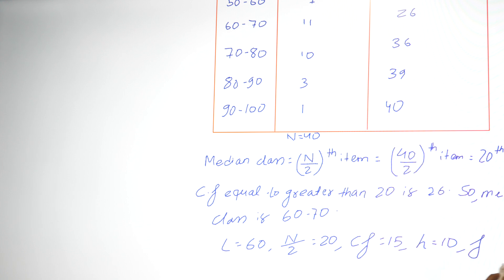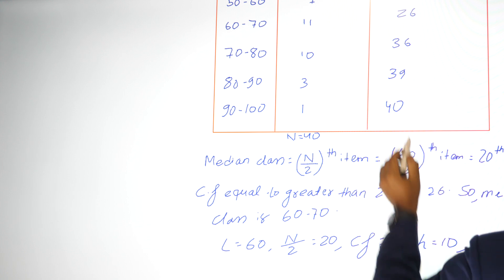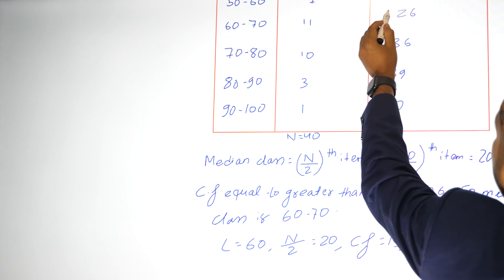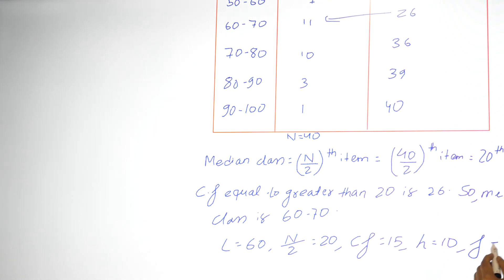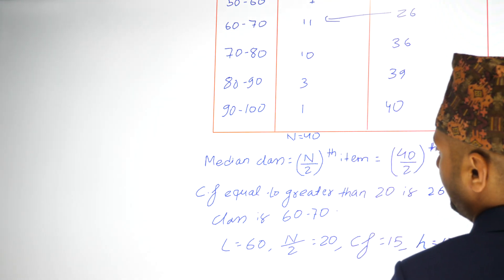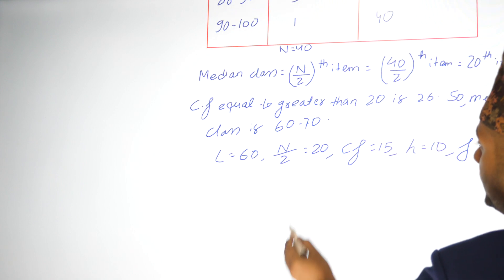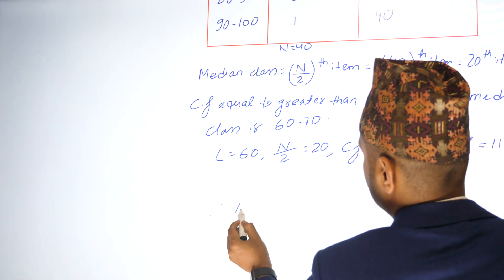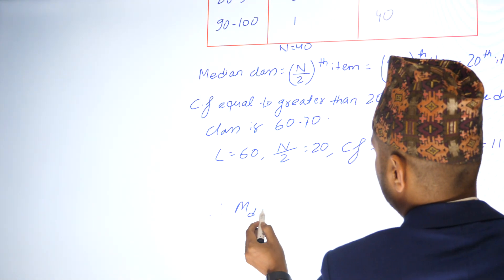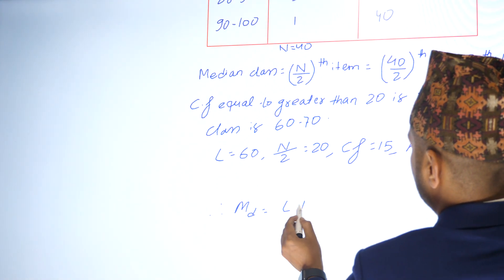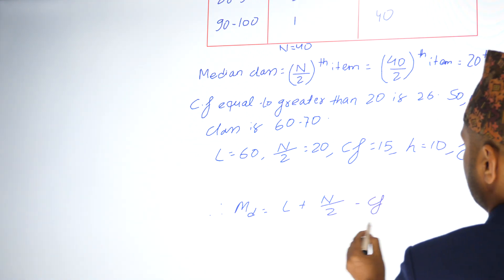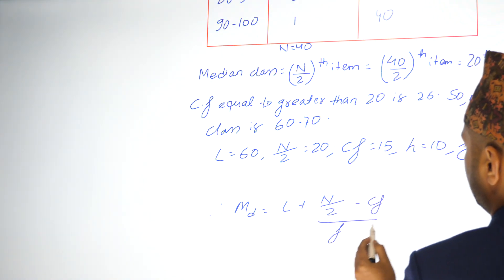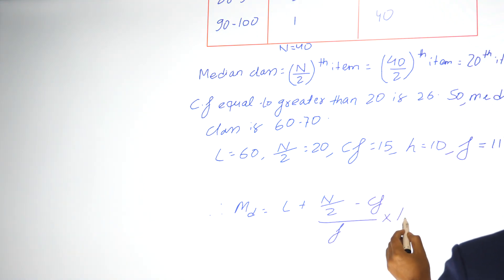The frequency f is 11. Therefore, median equals L plus [(N/2 minus Cf) divided by f] into h.